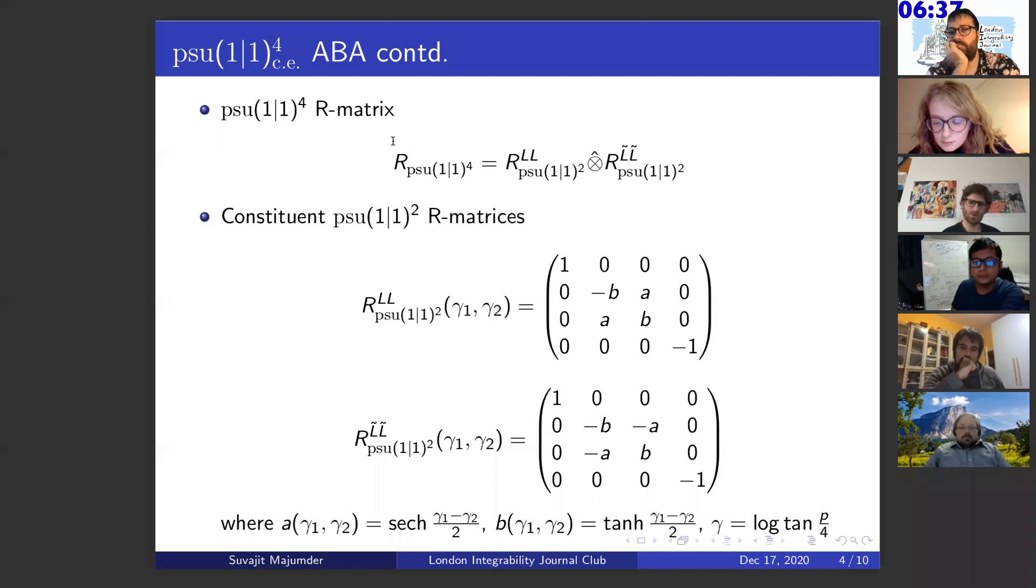We have the representation basis. Now, what is the R matrix? This is composed of two PSU(1|1) square R matrices like this, graded tensor product in between them. And this component PSU(1|1) square R matrices are written down here. Some nice features of these R matrices are that they are in the difference form because we are working in the pure RR limit. This kind of representation exists in terms of these relativistic gamma variables, which can be transformed to the usually known momentum variables in this manner, log 10 P by 4. And the functions showing up in the R matrices are of this type, hyperbolic functions, with the difference of the spectral parameters inside as argument.